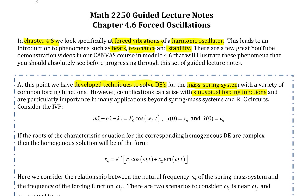Consider the IVP given here, where a trigonometric forcing function is given, and the initial conditions x(0) = x₀ and x'(0) = v₀.